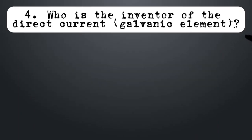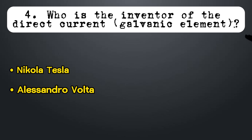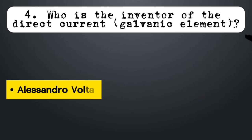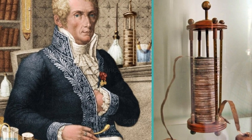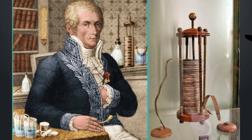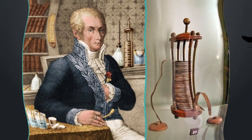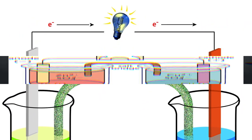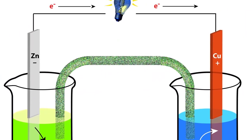Who is the inventor of the direct current galvanic element? Nikola Tesla, Alessandro Volta, or Ben Franklin? Italian physicist Alessandro Volta discovered that chemical reactions produce electricity and, in 1800, created an early electric battery that generated direct current.